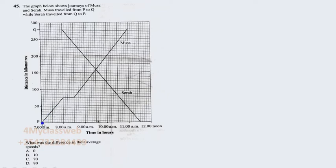This type of graph represents the movement of two people moving in opposite directions. We have Musa traveling from point P all the way to point Q, and we have Seller who moved from point Q to point P. As these two people were traveling, they met somewhere where the two graphs are crossing — that is where they met. It is very important to mention that because a question can ask at what time did these two people meet.